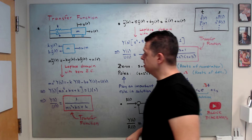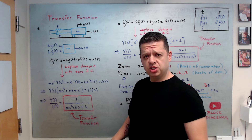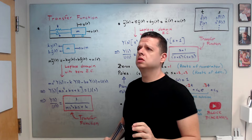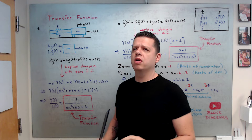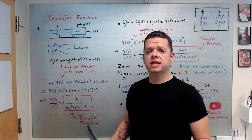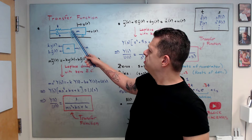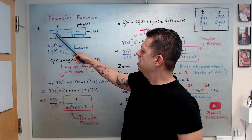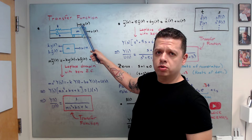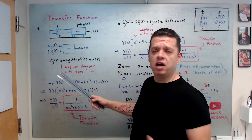We're going to discuss transfer functions. Transfer functions in control theory are objects that relate inputs to outputs in the Laplace domain. For example, let's say you have a spring-mass-damper system — spring, damper, mass — where y is the position of the cart and u is the applied force.